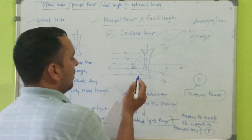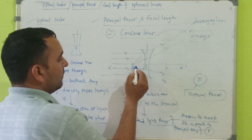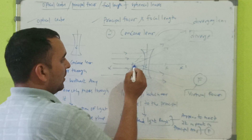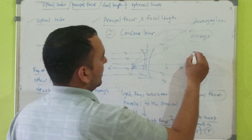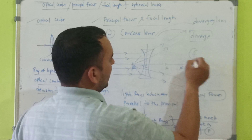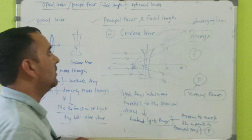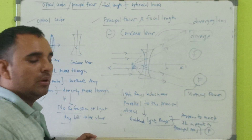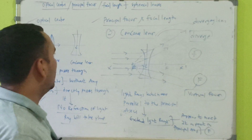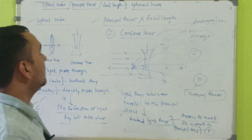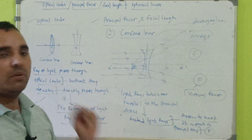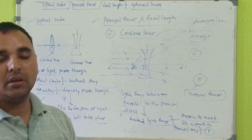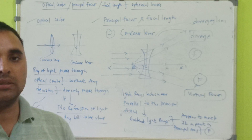The focal length is the distance between the optical center and the principal focus — that is the focal length of a concave lens. So this is how we deal with the optical center, principal focus, and focal length of spherical lenses.